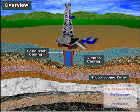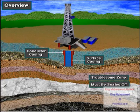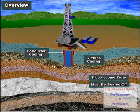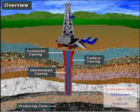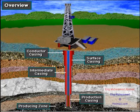Deep formations are sometimes so-called troublesome formations — they can be drilled by adjusting the properties of the drilling mud, but once drilled need to be sealed off to prevent problems in drilling the deeper portions of the well. So intermediate casing seals off troublesome zones; sometimes deep wells require more than one intermediate casing string. Finally, once the producing zone is drilled it needs to be protected and sealed, so production casing isolates the producing zone.